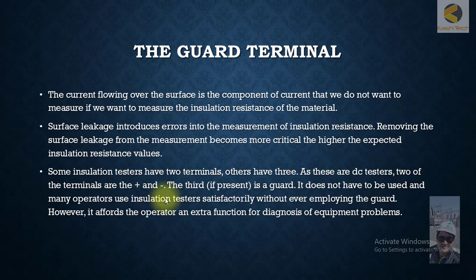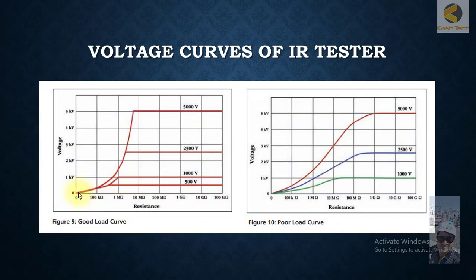Here they have shown voltage output of two different insulations when we are testing them. This is the voltage output where the insulation is good. You can see the voltage increases because in the start, because of charging current and high polarizing current, the voltage output is less. With some time it increases and reaches its maximum value, which is the applied voltage value, and then its curve is quite steep.